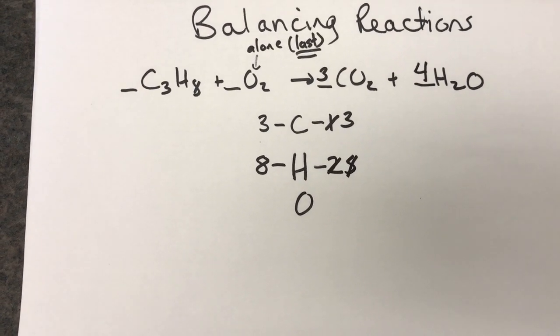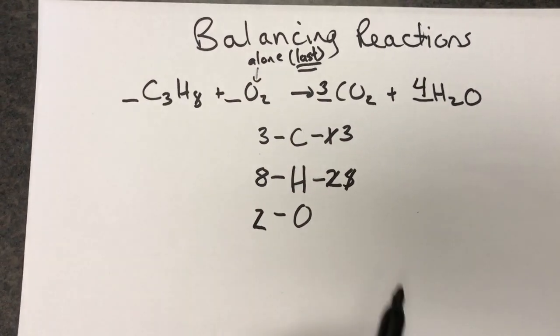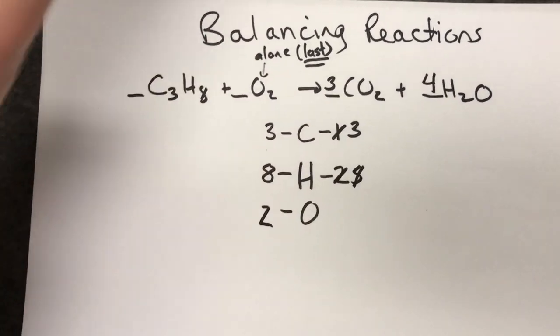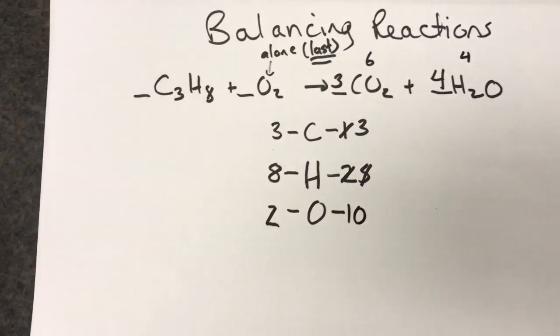Let's move on to oxygen. On our left hand side we have 2. On our right hand side we have 3 times O2, in other words 6 from this one and 4 from this one for a total of 10 oxygens.